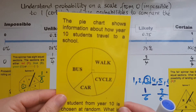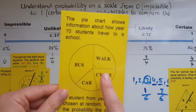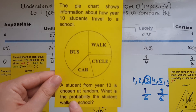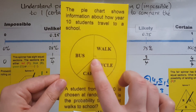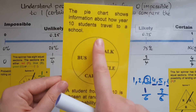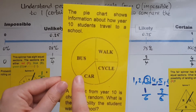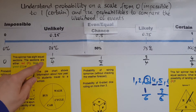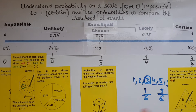We have a pie chart showing how year 10 students travel to school: walk, cycle, car, and bus. A student from year 10 is chosen at random. What is the probability the student walks to school? The walking section has a 90-degree angle, which means it's a quarter of the circle — so the probability is a quarter, 25%, or 0.25. That lands exactly at the 25% position on the scale.